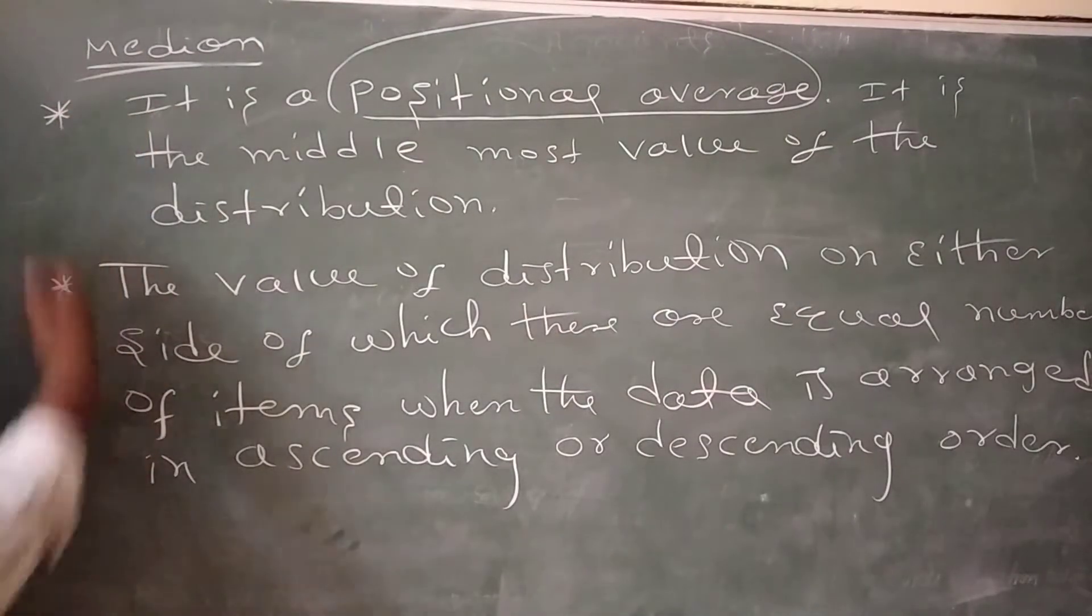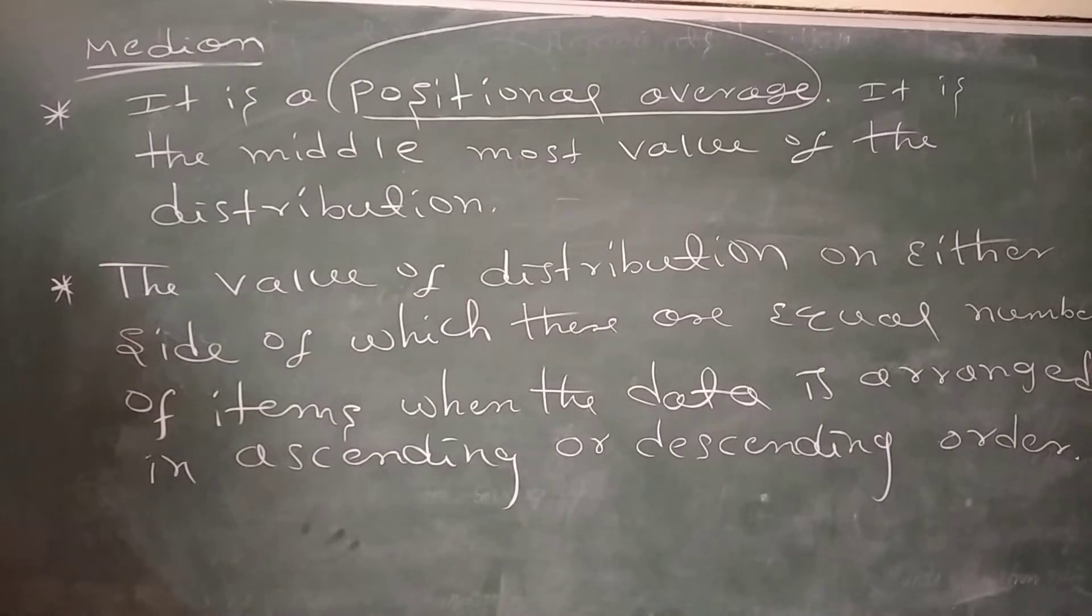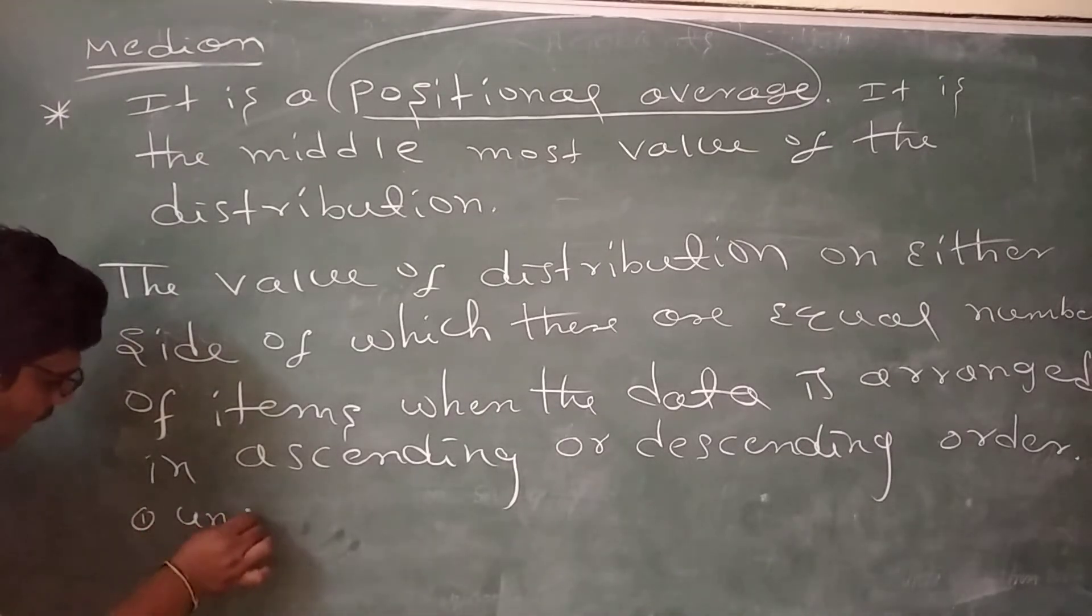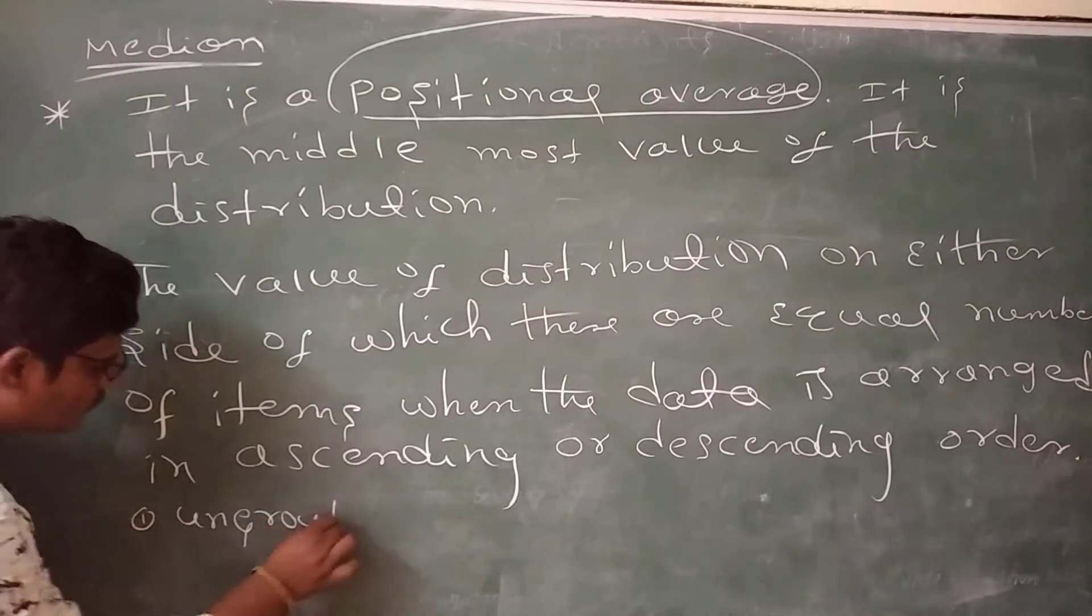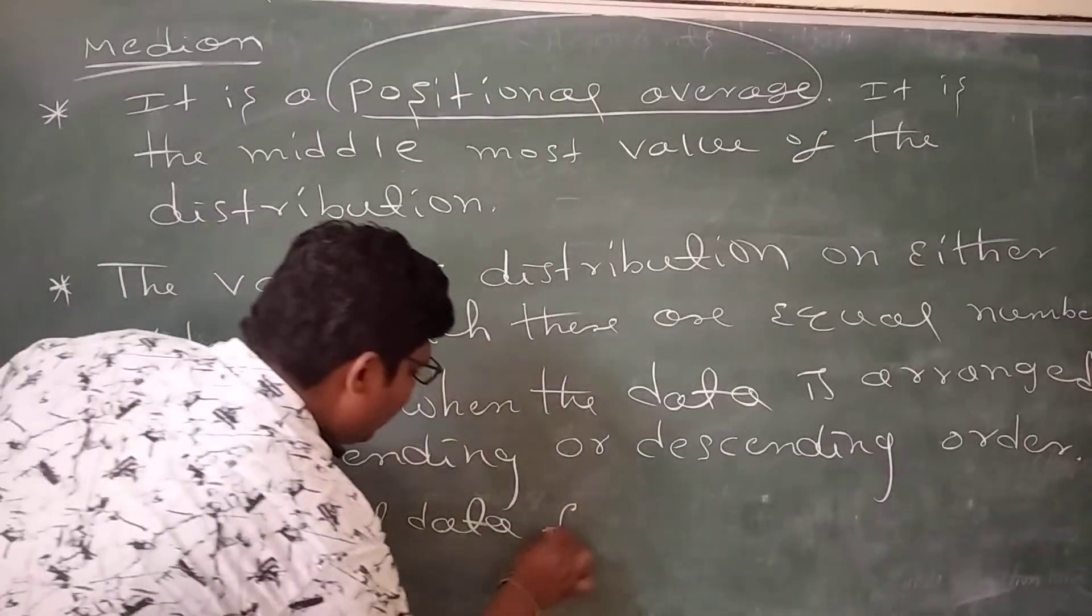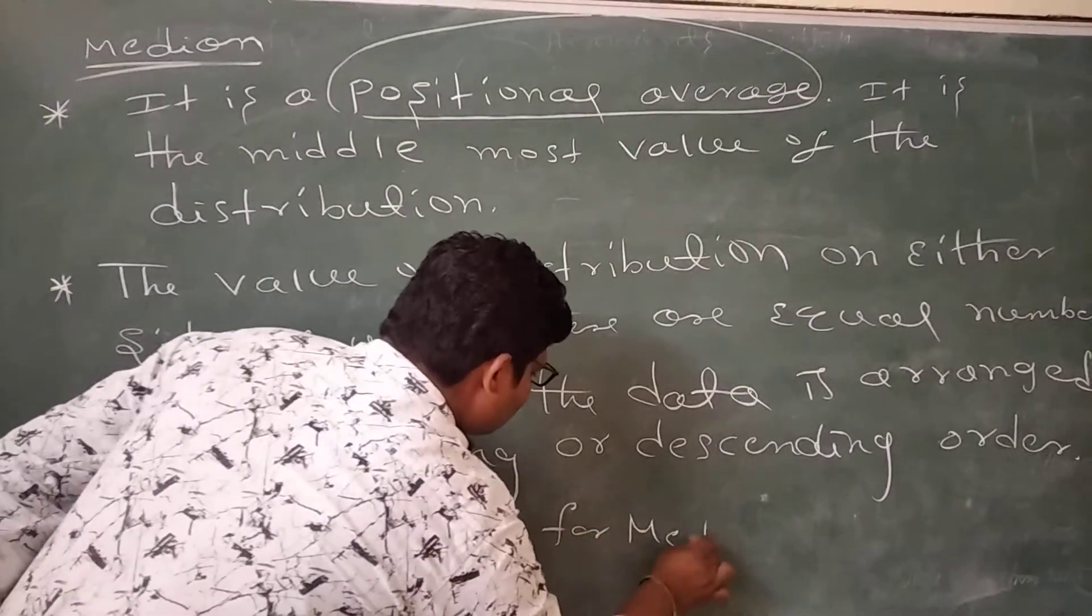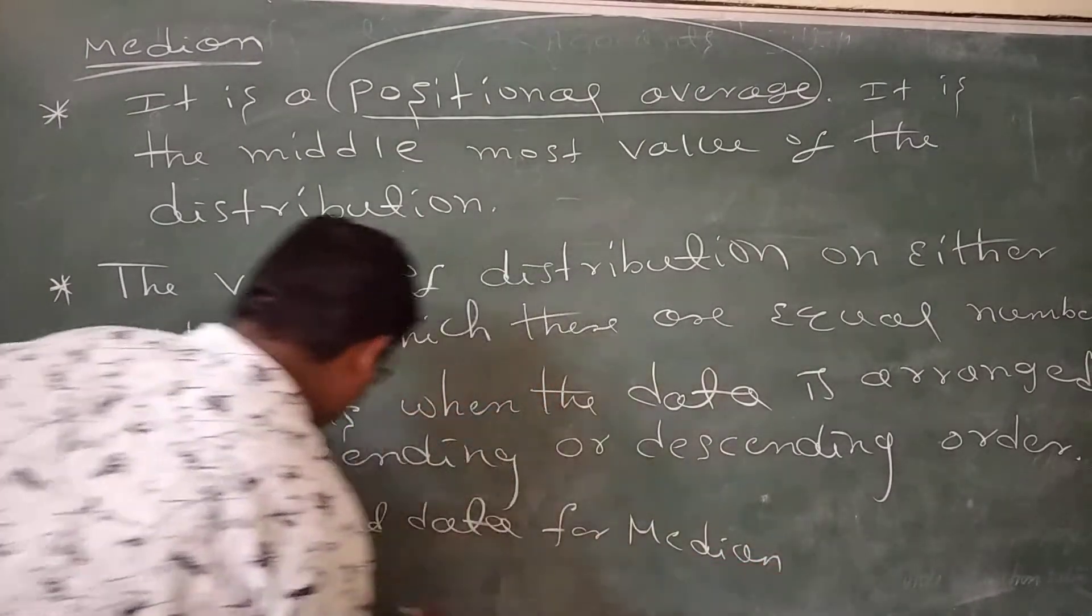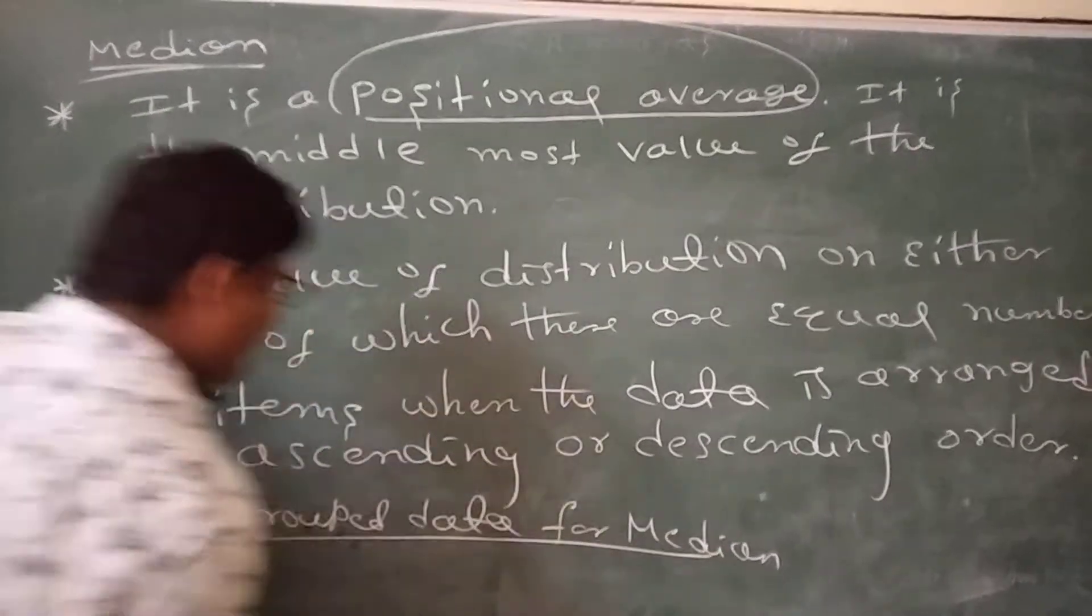The median methods, we have classified as three parts on the basis of classification. Under the basis of the application, one is ungrouped data, ungrouped data for median. Ungrouped data, it means single value of data.